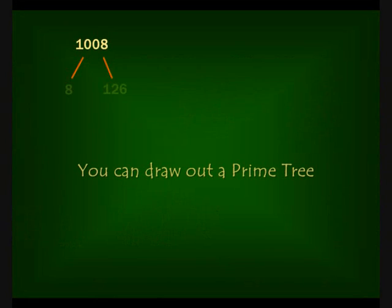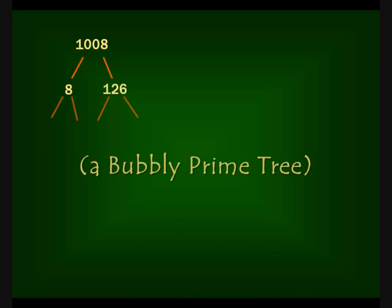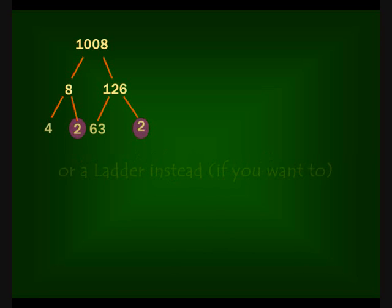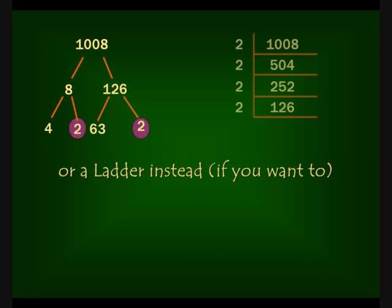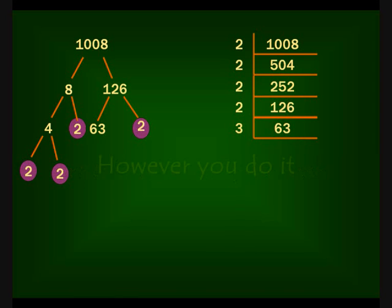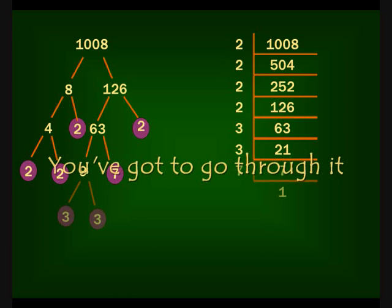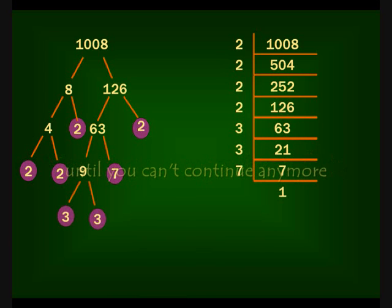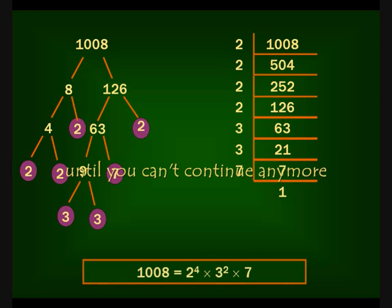You can draw out a prime tree, a bubbly prime tree, or a ladder instead if you want to. However you do it, you gotta go through it until you can't continue anymore.